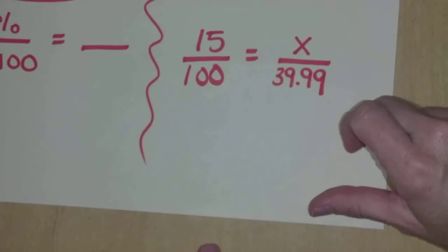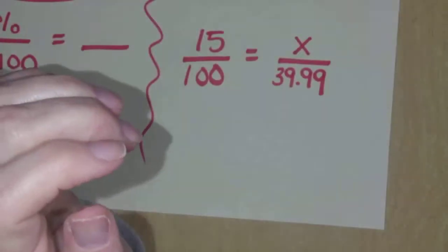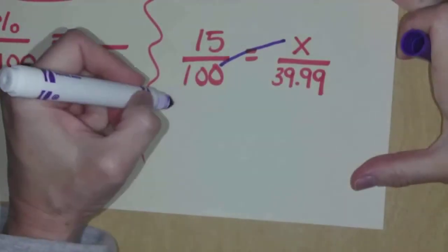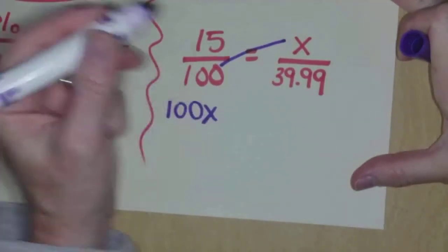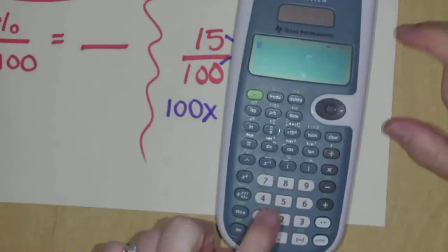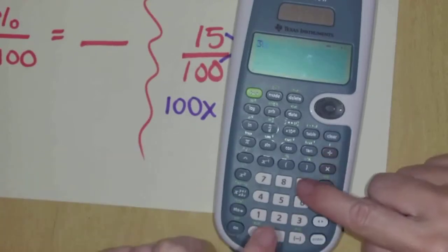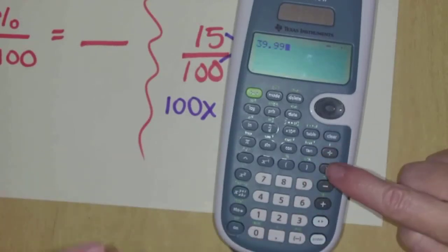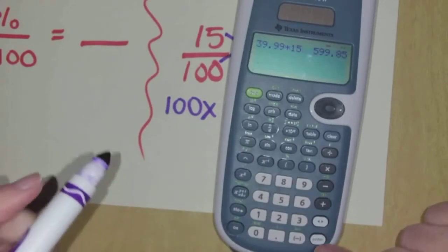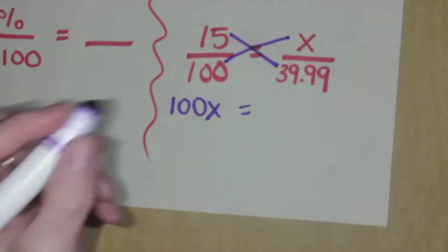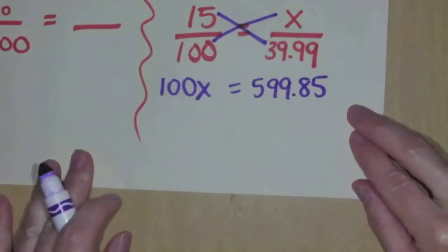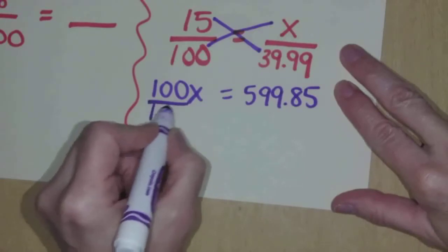When you cross multiply, you take X times 100, that's 100X. And then you take 15 times $39.99. So I have a calculator here. $39.99 times 15 is 599.85.